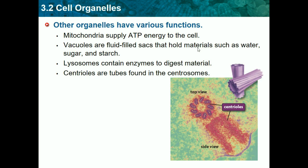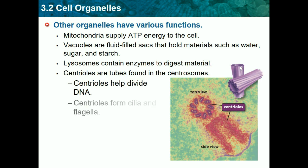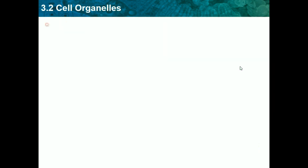Centrioles are tubes found in centrosomes. They aid in many tasks — they help divide DNA to assist with cell reproduction and division, and they form cilia and flagella. Cilia and flagella help cells move; some cells have them on the outside like little strings or strands that push the cell through whatever it is in.